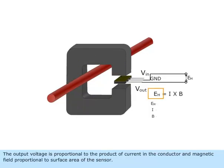The output voltage is proportional to the product of current in the conductor and magnetic field proportional to surface area of the sensor.